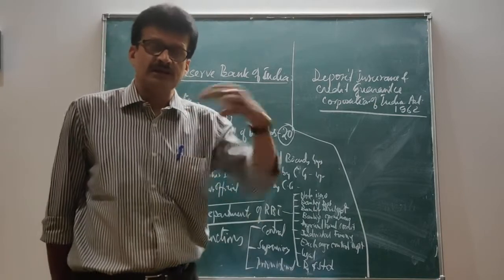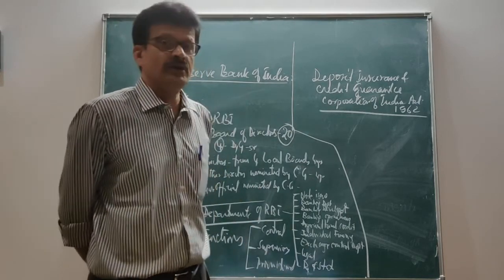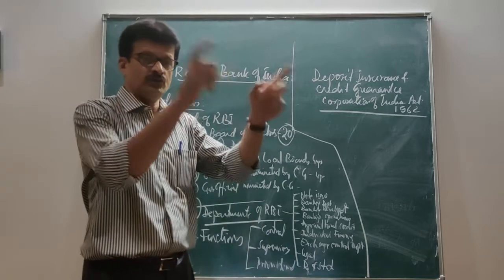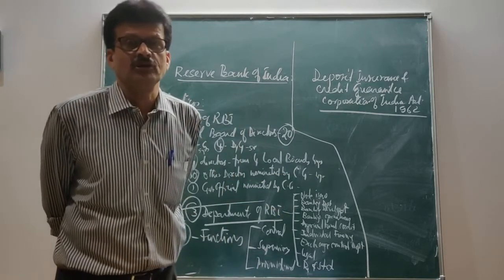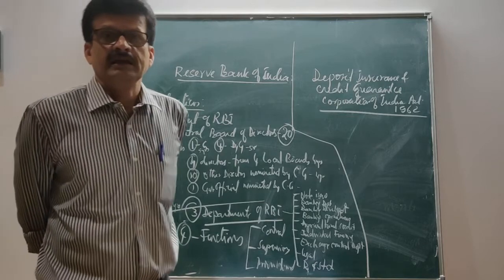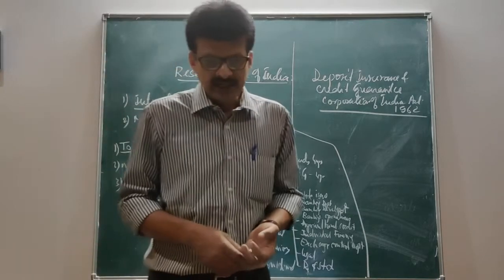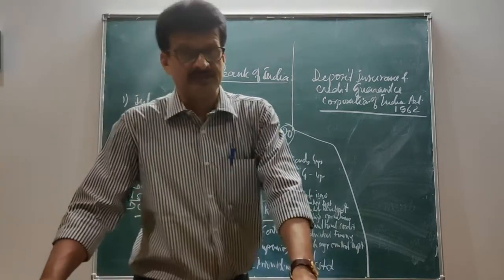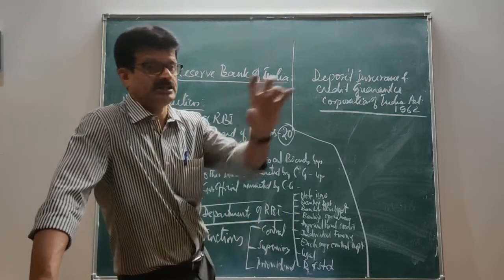What were the reasons for the passing of the Reserve Bank of India? There was a time when in the world, almost in all the countries, there was a hue and cry for the constitution or establishment of a central bank in each and every country. In order to constitute a central bank to regulate, control, and supervise the financial and monetary policy of the country, the Royal Commission on Currency and Finance was constituted in the year 1925, popularly known as the Hilton Young Commission.